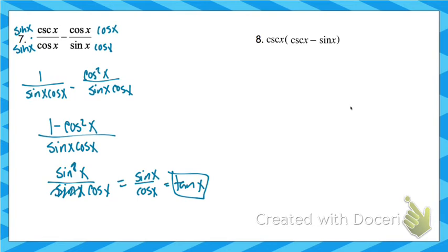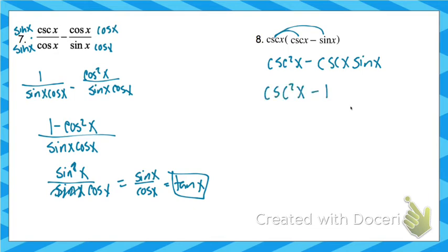On number 8, I'm going to distribute. Cosecant times cosecant gives cosecant squared. Cosecant times sine — sine and cosecant are reciprocals, so anything times its reciprocal is 1. If you don't see that, remember cosecant is 1 over sine, so those sines cancel out. Cosecant squared minus 1 is the rearranged form of one of your Pythagorean identities, and it equals cotangent squared.